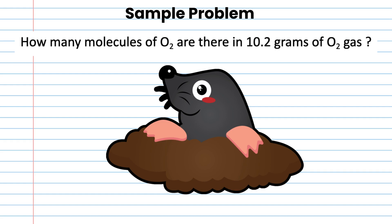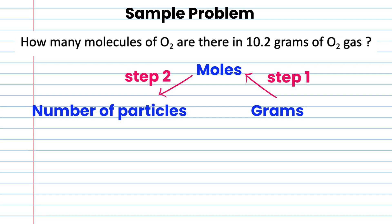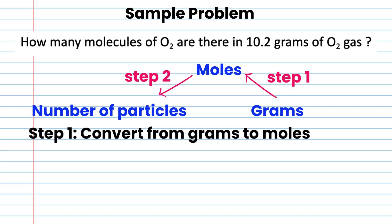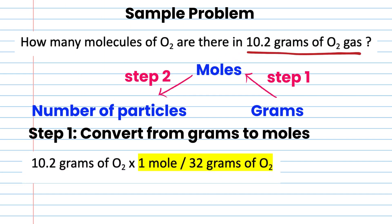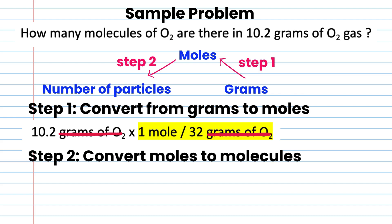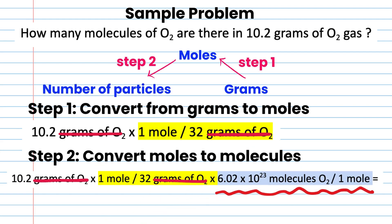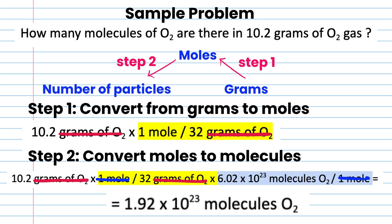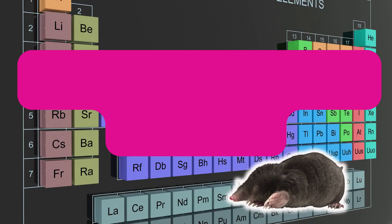Conversion from grams to number of particles. Sample problem: how many molecules of oxygen are in 10.2 grams of O₂ gas? We need to convert grams to moles first, then moles to number of molecules. Step 1: 10.2 grams of O₂ times one mole over 32 grams of O₂ — cross out the grams to get moles. Step 2: multiply by 6.02 times 10 to the 23 molecules per mole of O₂. The moles cancel, giving a final answer of 1.92 times 10 to the 23 molecules of O₂.